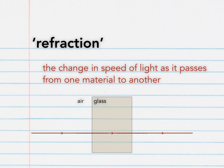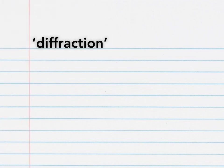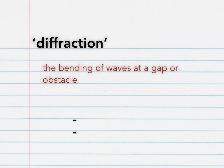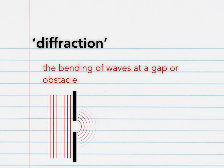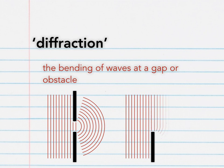Next up, we have diffraction. The important difference here is that there's no change in the speed of the wave, and the wave isn't passing from one material to another. Diffraction is the bending of waves at a gap, as shown in this diagram, or obstacle, as shown here. Make sure that you also know how the wavelength of the waves affects how much diffraction takes place.